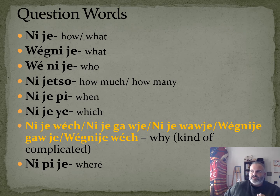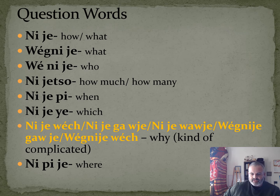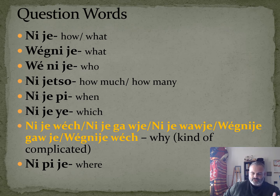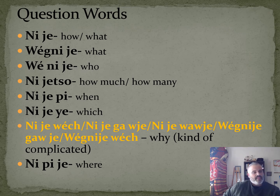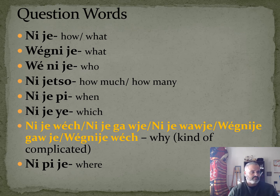Why is one of the most complicated ones to deal with, because you basically use ninja, which is like 'how' or 'what,' or wek ninja, and they use it with wetch. If it's in the past tense it's gaoja, and waoja in the future. So ninja wetch is your present tense 'why.' Wek ninja wetch also means 'why.' Ninja gaoja means 'why did,' and ninja waoja means 'why will.' Nije we is more of a statement like 'why.'